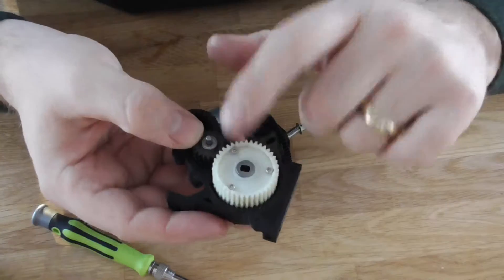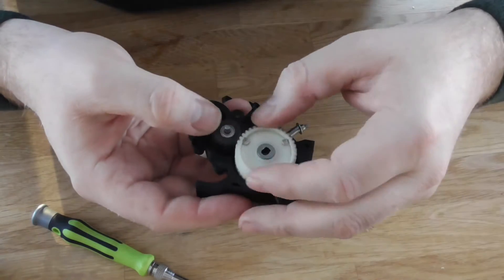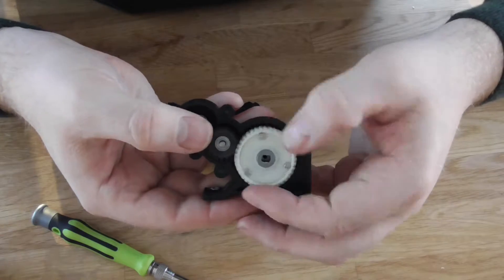It just so happens that apparently Tamiya uses a 0.8mm modulus on their gears, so that worked out extremely well, and it meshed beautifully first time.